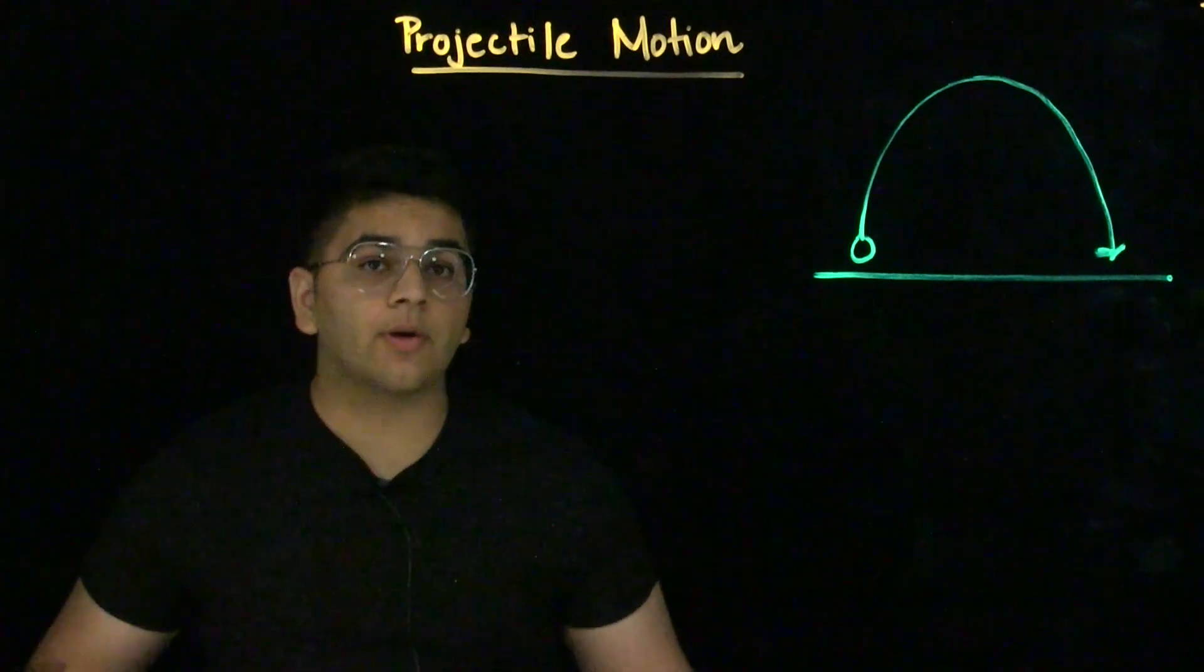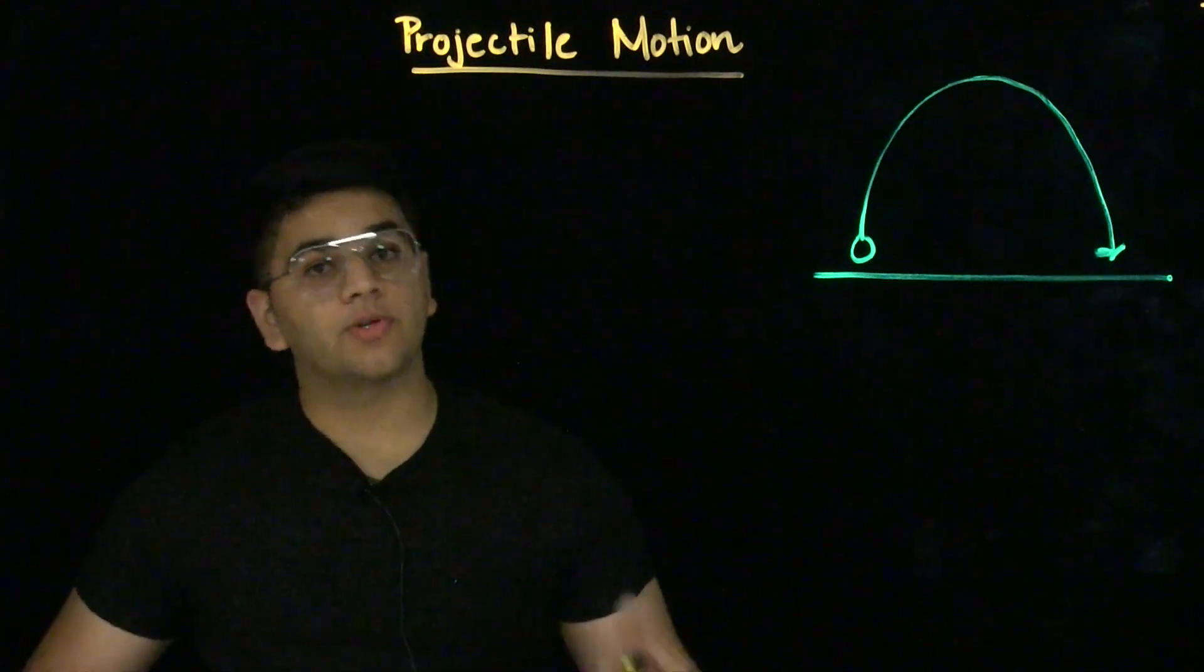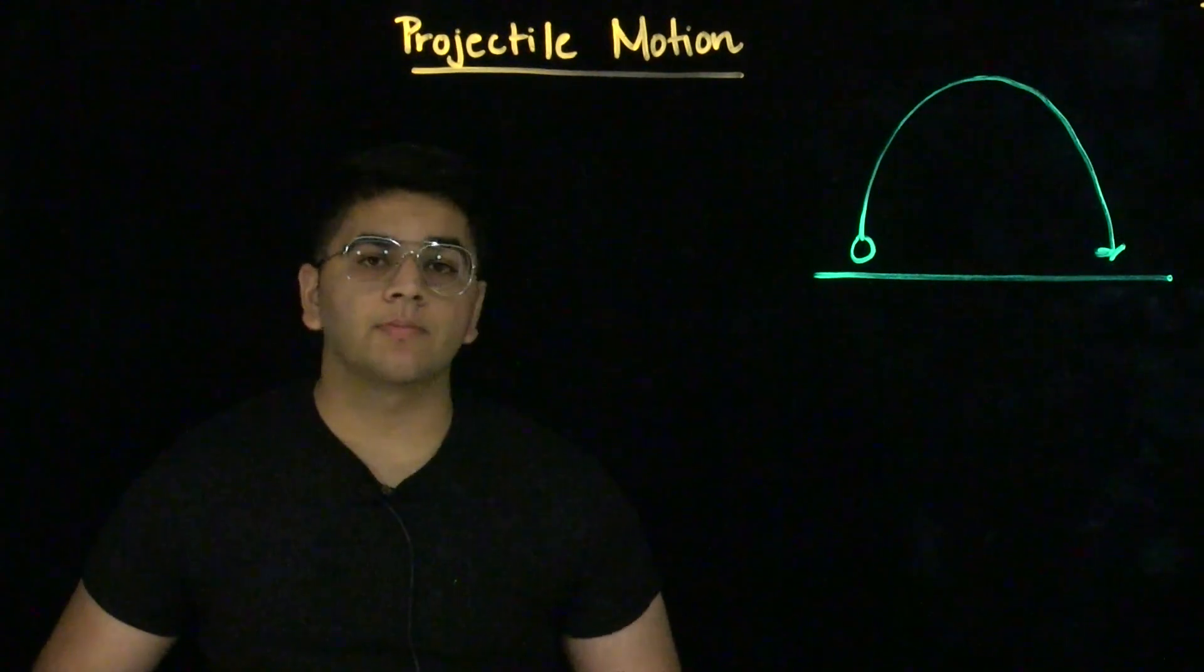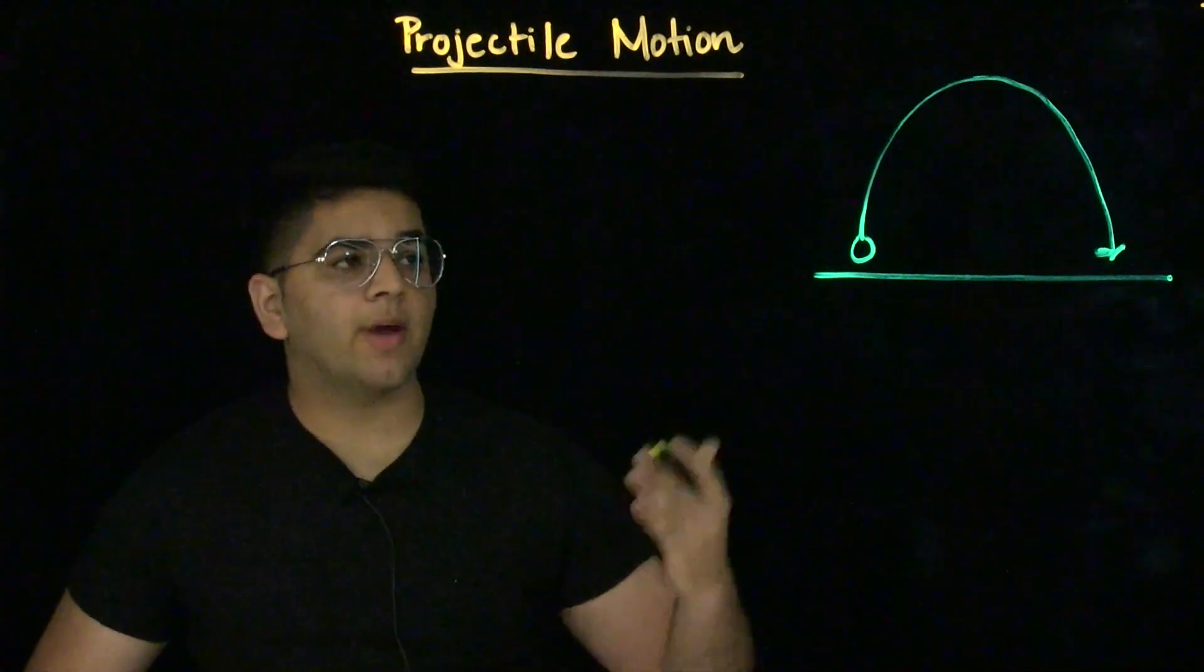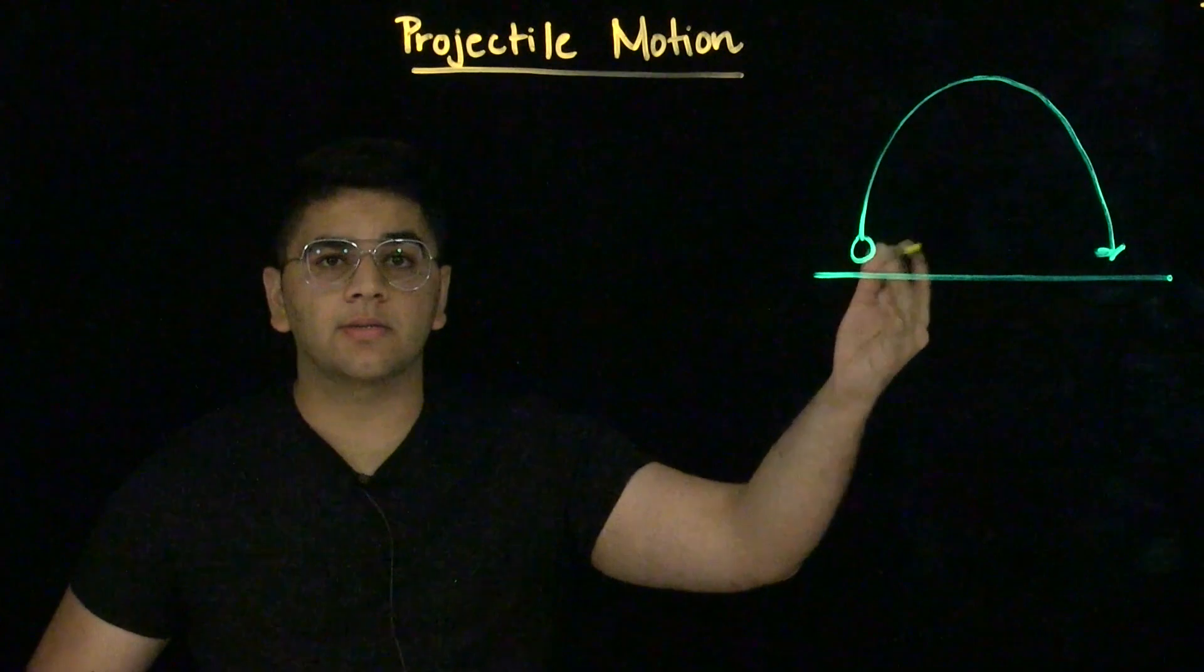Unlike what you've been seeing so far, projectile motion involves looking at the motion in not one, but two dimensions. A common trajectory path for a projectile will look something like this, like a parabola.